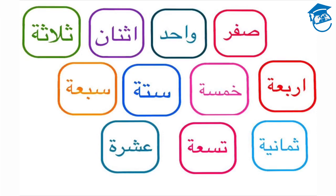Now let's try counting together one more time. Listen and repeat after me. We're counting from zero to ten: sifr, wahed, ithnan, thalatha, arba, khamsa, sitta, sabah, thamanya, tissa, asherah.